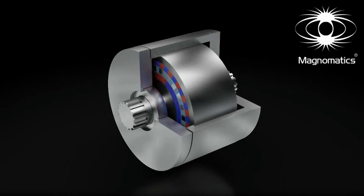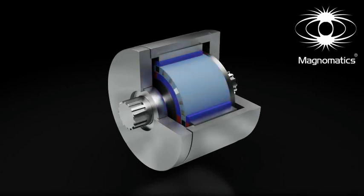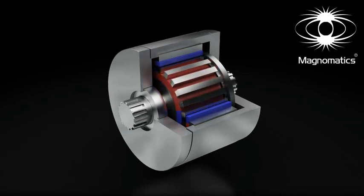The gear consists of only three rings. Two of these have powerful magnets arranged in an alternating north-south pattern. The middle ring consists of steel segments which alter the magnetic field between the inner and outer magnet rings.